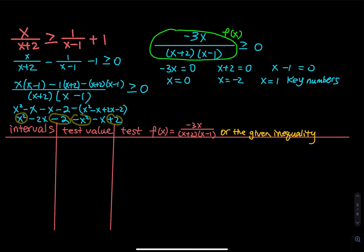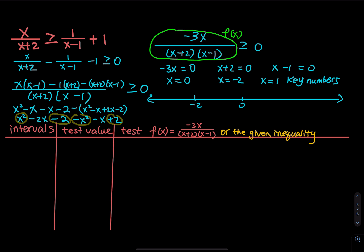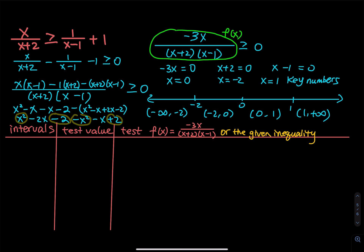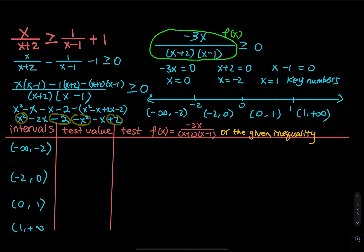Put the key numbers on the number line to construct your test intervals. You have negative 2, 0, and 1 — three numbers that cut the line into four pieces: negative infinity to negative 2, negative 2 to 0, 0 to 1, and 1 to positive infinity.